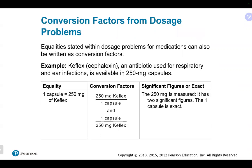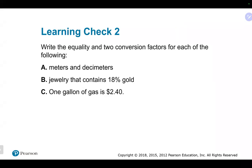Doses work the same way. Keflex 250 milligrams per capsule means in every one capsule you get 250 milligrams of the medicine. Here you would look at the sig figs of the measured part of the conversion factor, which would be two. You wouldn't look at the one. So when using a crossover metric-to-English conversion factor, or one from inside a problem, you generally ignore the 'one' part and look at the other number for sig figs.